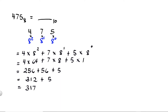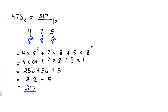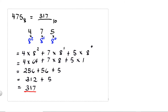So the decimal equivalent of 475 octal is 317, which is 317 base 10.